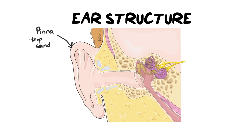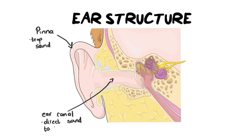The next structure is this long canal here, which is our ear canal. Different textbooks might have a slightly different name, but ear canal is an acceptable term. Its main function is to direct sound to the eardrum — or, as I prefer to use its proper name, the tympanic membrane, which brings me to our next label: the tympanic membrane.